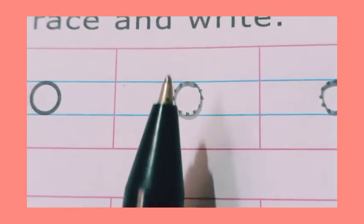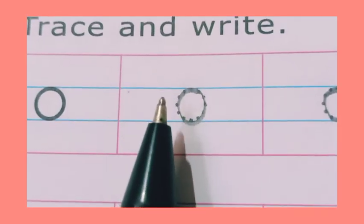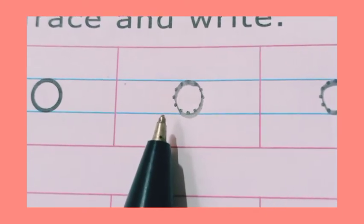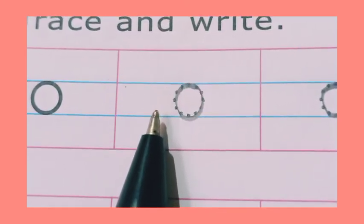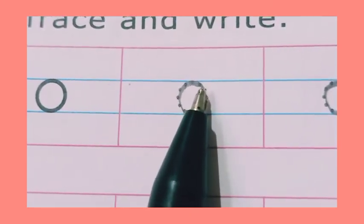First of all, you count the lines. 1, 2, 3 and 4. Two red lines and two blue lines. So we will make this small O in two blue lines. Second number and third number. So start.